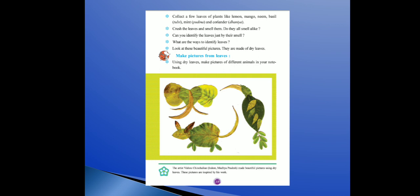Look at this beautiful picture — idhar ek beautiful picture diya gaya hai. They are made of dry leaves — yeh jo picture hai wo dry mein sukhe leaves ka banaya hua hai. Make pictures from leaves — using dry leaves, make pictures of different animals in your notebook. Aapko dry sukhe patte ke use se alag-alag animals ka picture apni notebook mein banana hai.